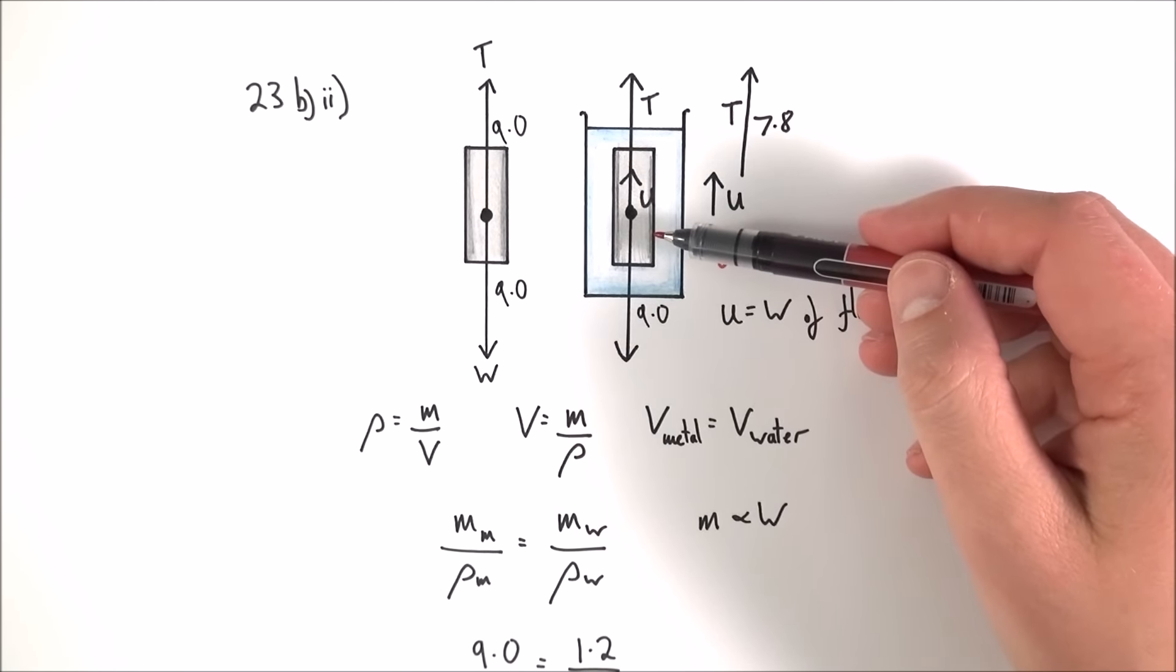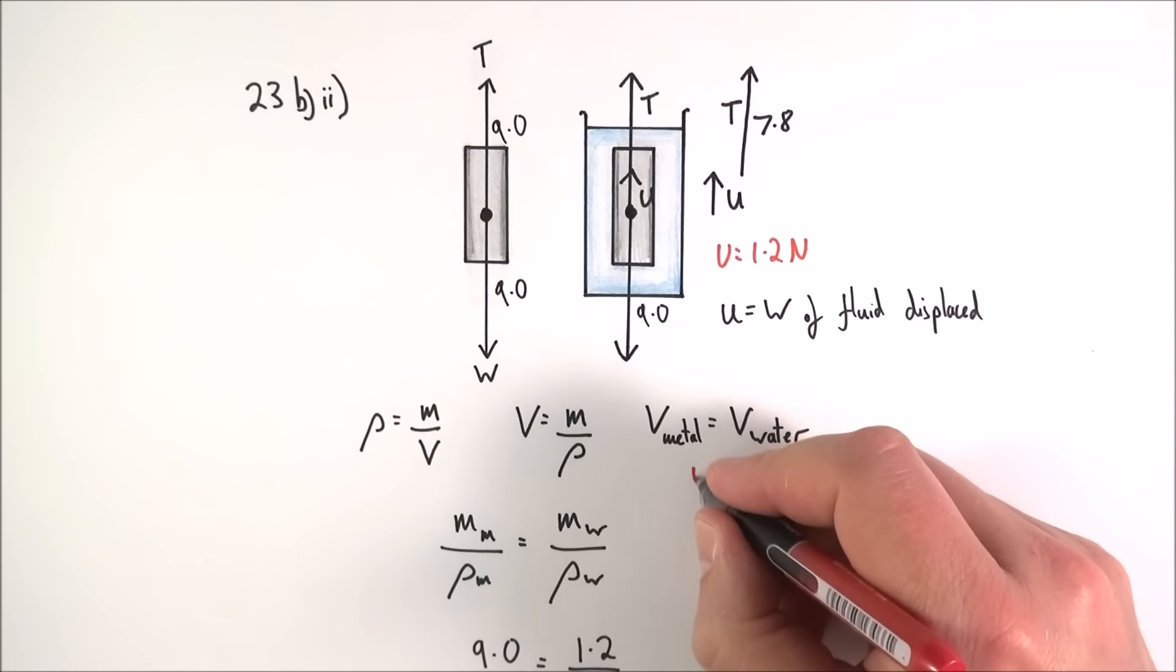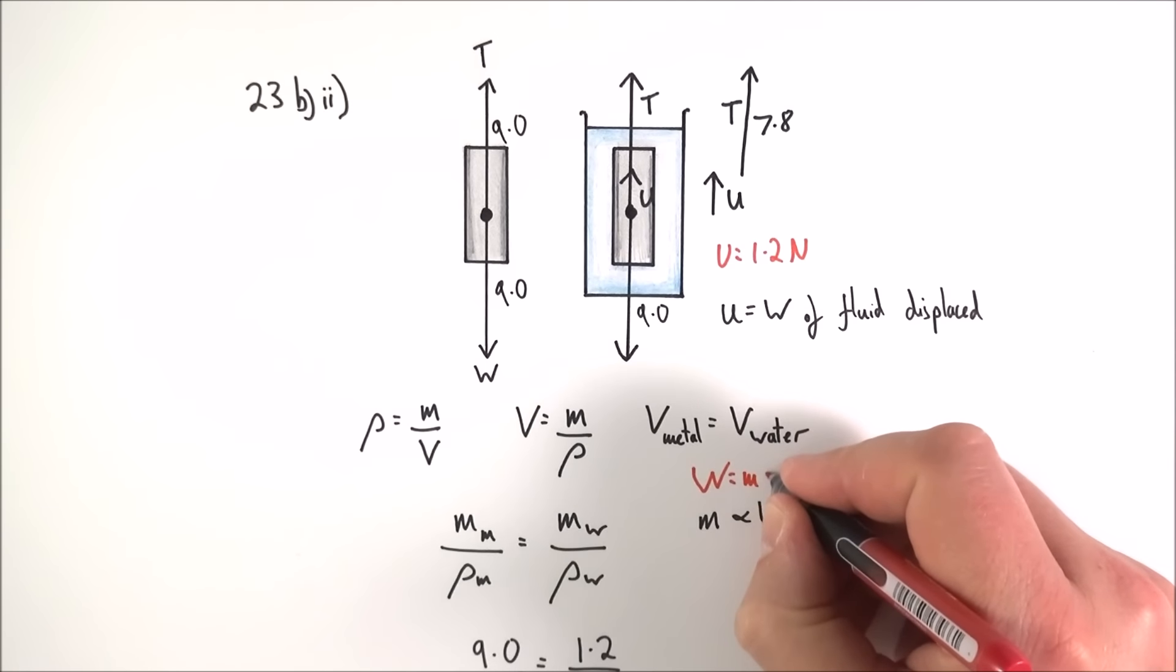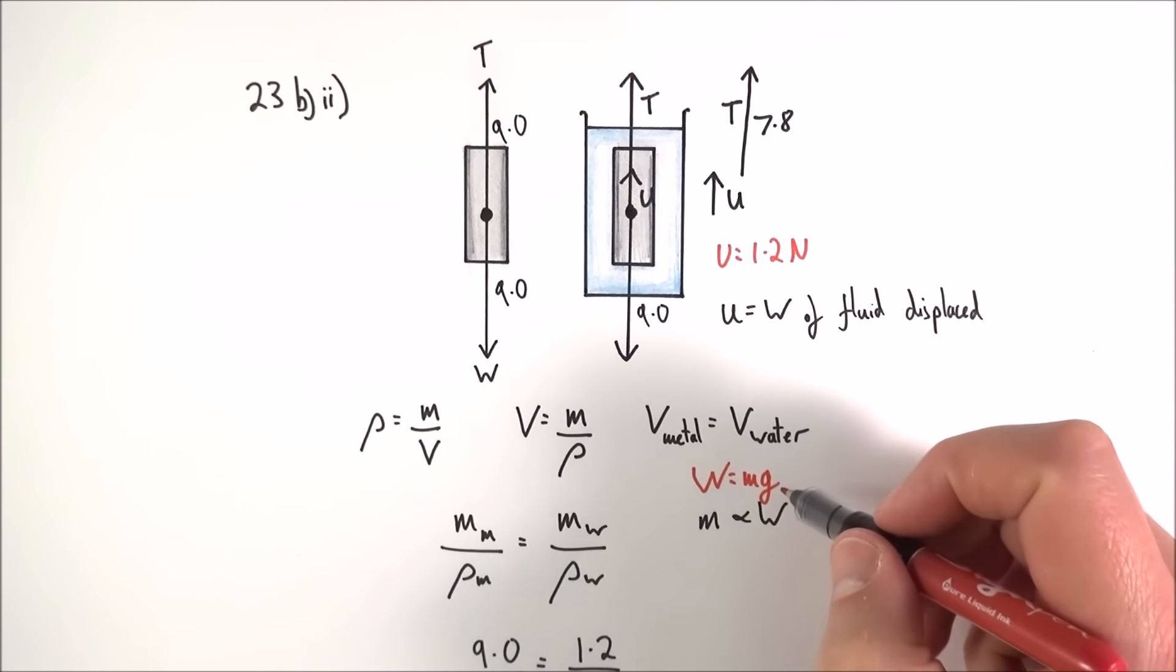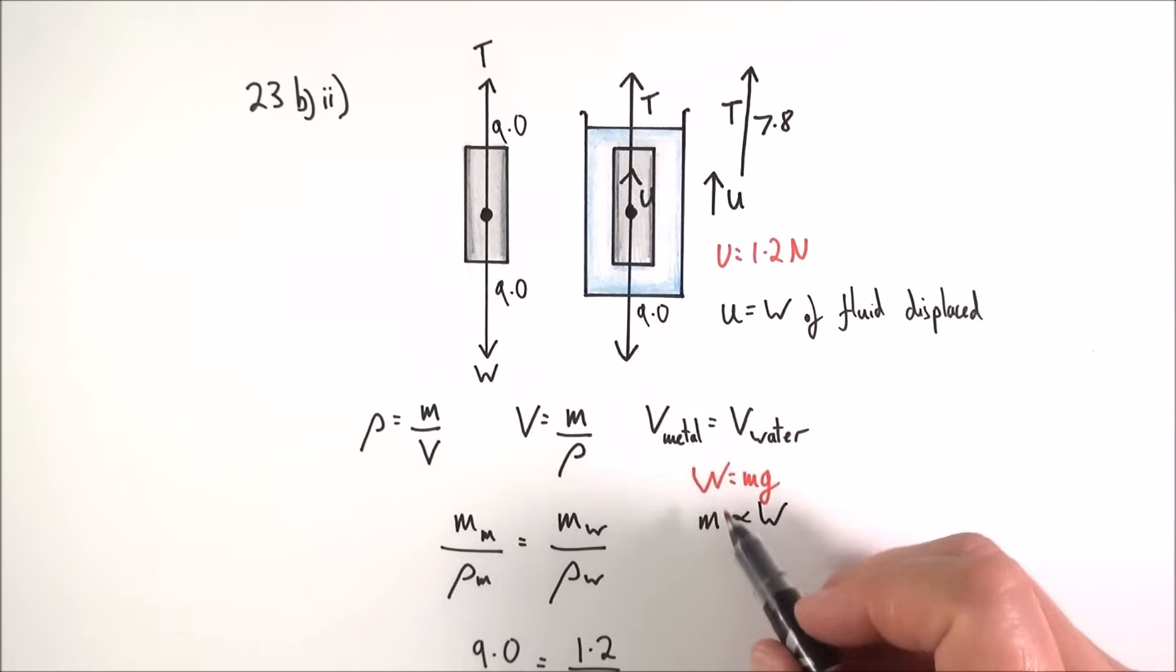And what we know is that when this is inside this, the volume of the metal is equal to the volume of the water that it displaces. So what I then did was if we can equate the volumes together, the mass of the metal over the density of the metal is equal to the mass of the water over the density of the water, and because we know that weight is equal to mg, so the mass times gravitational field strength, m is proportional to the weight.